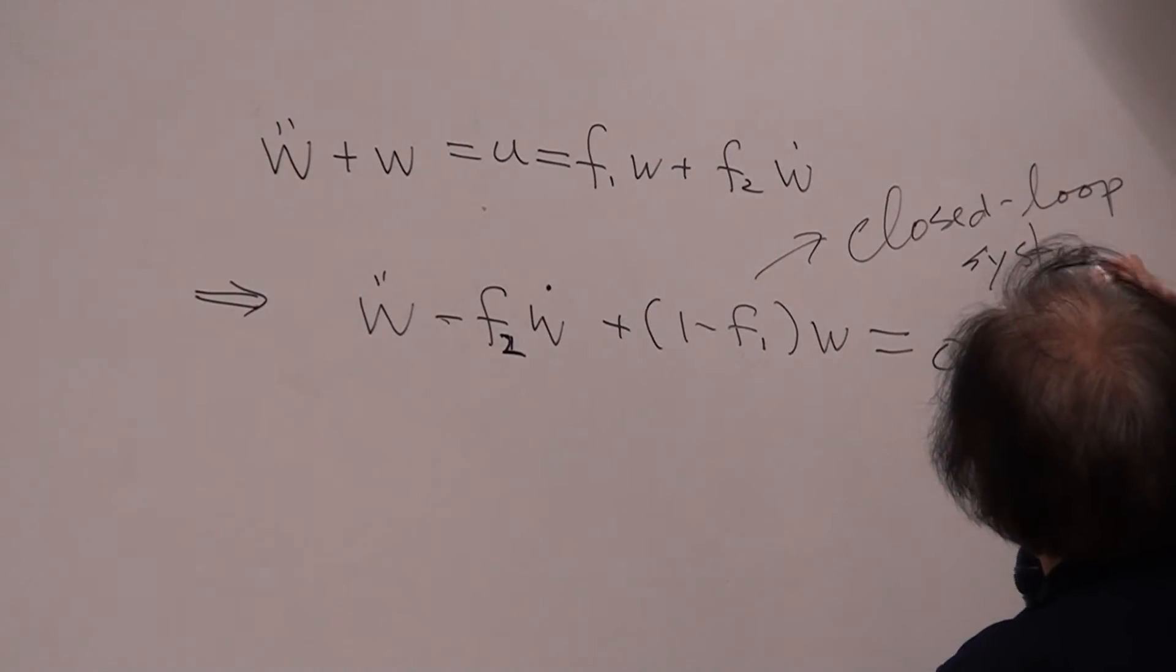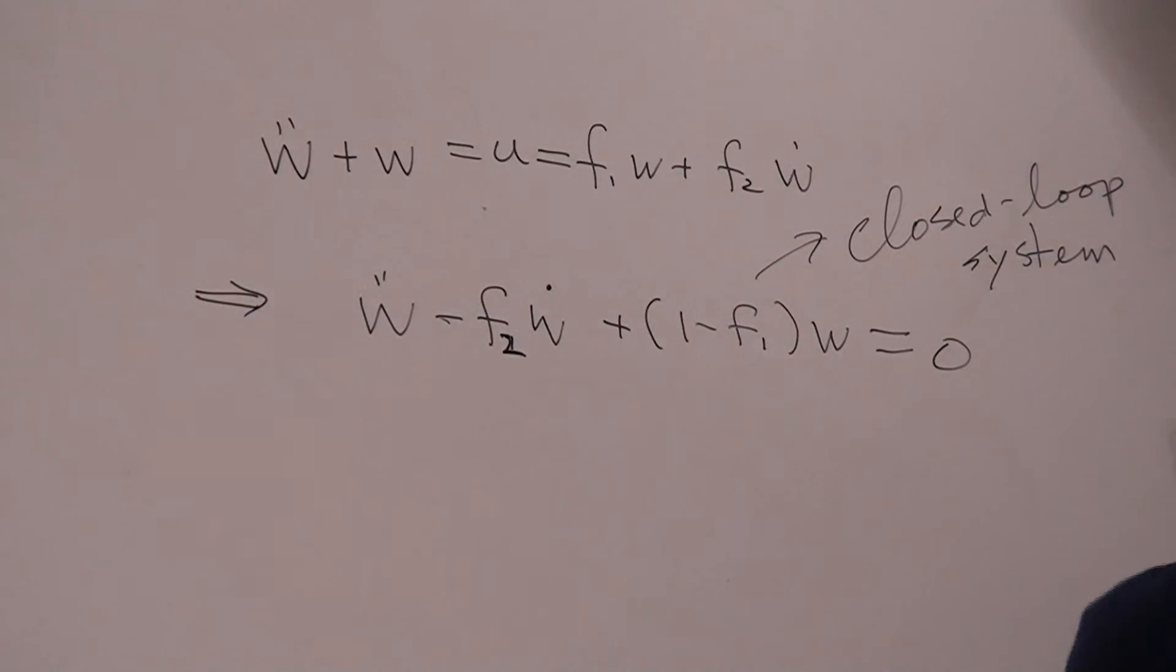Now, if we let w equal to C e to the lambda t, then we'll get the lambda square minus F2 lambda plus 1 minus F1 in parentheses, and then C e to the lambda t equals 0. All right? Now, what is lambda value we have? Assume that's the eigenvalue. Lambda square minus F2 lambda plus 1 minus F1 equals 0. That's my eigenvalue problem. So my eigenvalue of the closed-loop system will be equal to that.